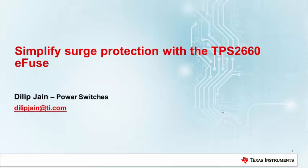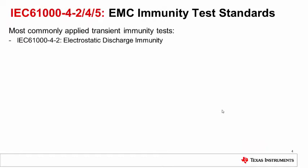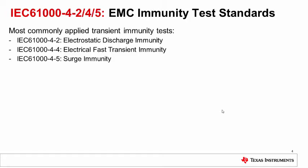Welcome to this training video on simplified surge protection with the TPS2660. Industrial systems need to comply with IEC test standards. The most commonly applied transient immunity tests are: IEC 61000-4-2, which simulates the discharge of a charged human body; IEC 61000-4-4, the electrical fast transient (EFT) immunity test, which simulates interference caused by inductive switching; and IEC 61000-4-5, the surge immunity test, which simulates interference due to atmospheric discharge such as lightning.